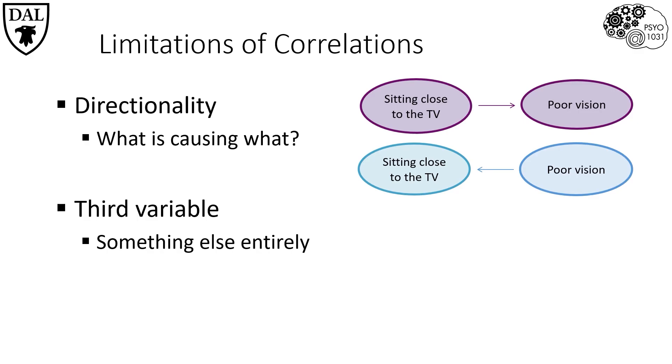For our current example, a third variable could be the amount of time spent indoors. It might be that spending time inside leads to both people spending more time watching television as well as poor vision.